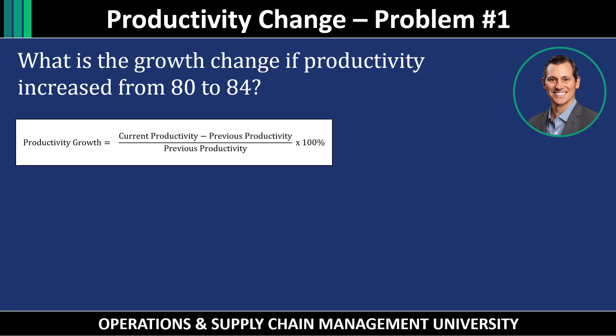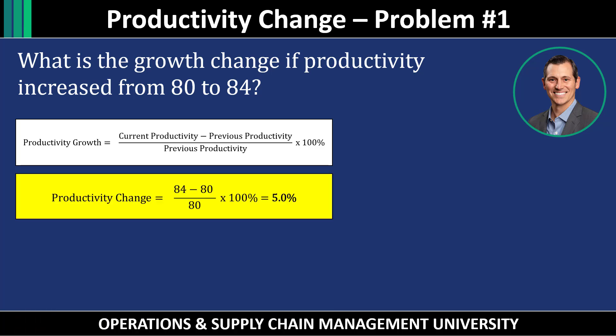Let's go over problem number one: what is the growth change if productivity increased from 80 to 84? For this example, 84 is your current productivity and 80 is your previous productivity. You're going to take 84 minus 80, which equals 4. Then 4 divided by 80, multiplied by 100, gives you 5%.